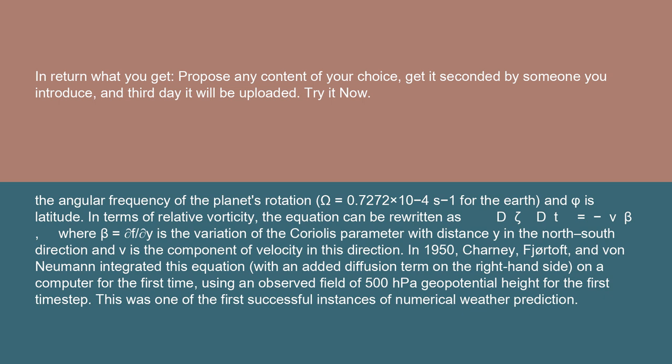In terms of relative vorticity, the equation can be rewritten as dζ/dt equals minus v·β, where β equals ∂f/∂y is the variation of the Coriolis parameter with distance y in the north-south direction, and v is the component of velocity in this direction.